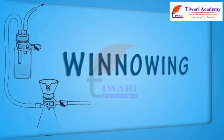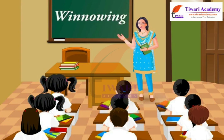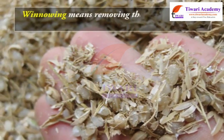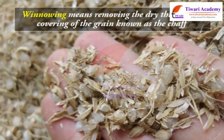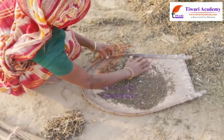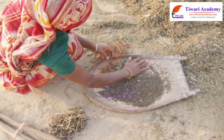Winnowing. In the previous module, you learnt about threshing. Let us now learn about winnowing. Winnowing means removing the dry thin outer covering of the grain known as the chaff. It is also used to remove weevils or other pests from stored grain.